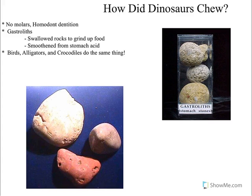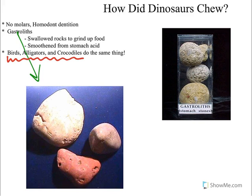A couple of interesting things about dinosaurs: first, did dinosaurs chew up their food? Dinosaurs have what's called homodont dentition, meaning they have the same type of tooth all the way around their mouth, which means they have no molars and can't chew up their food the way we do. What they do is swallow things called gastroliths — stomach stones that sit in the stomach and help grind up food as the dinosaur digests, just like molars do. Interestingly, birds, alligators, and crocodiles all do this today, and we find gastroliths with acid pits associated with dinosaur skeletons.